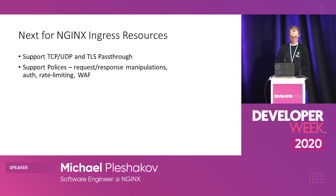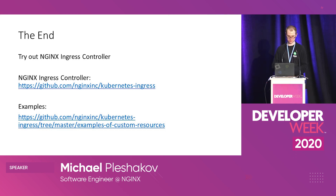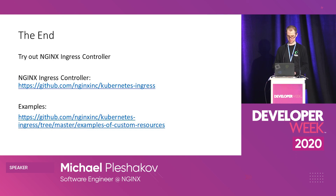The NGINX ingress controller project is open source and publicly available on GitHub — you can try it, open issues, or contribute via pull requests. NGINX has two versions: NGINX open source and NGINX Plus, which is a commercial version with additional features and a support contract. Our ingress controller works with both. The examples shown in this presentation are based on the examples available in the GitHub repository, so you can try them out.